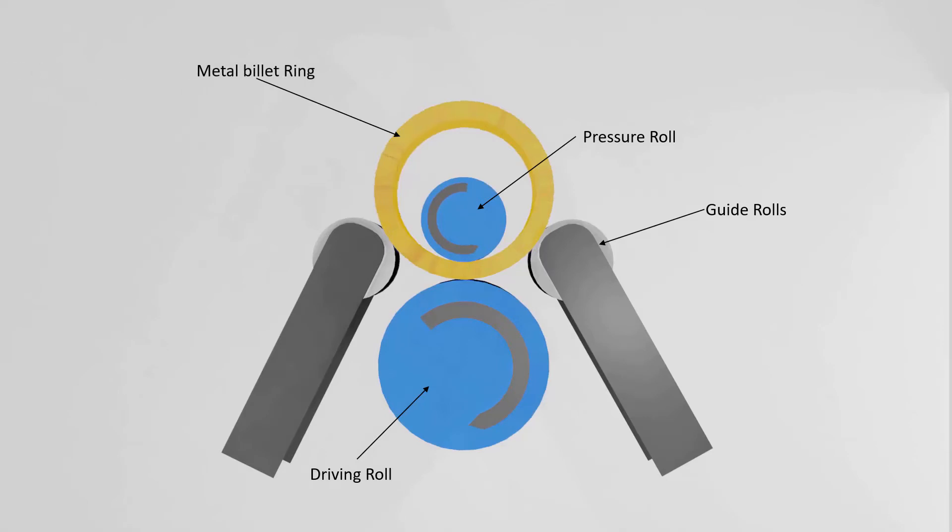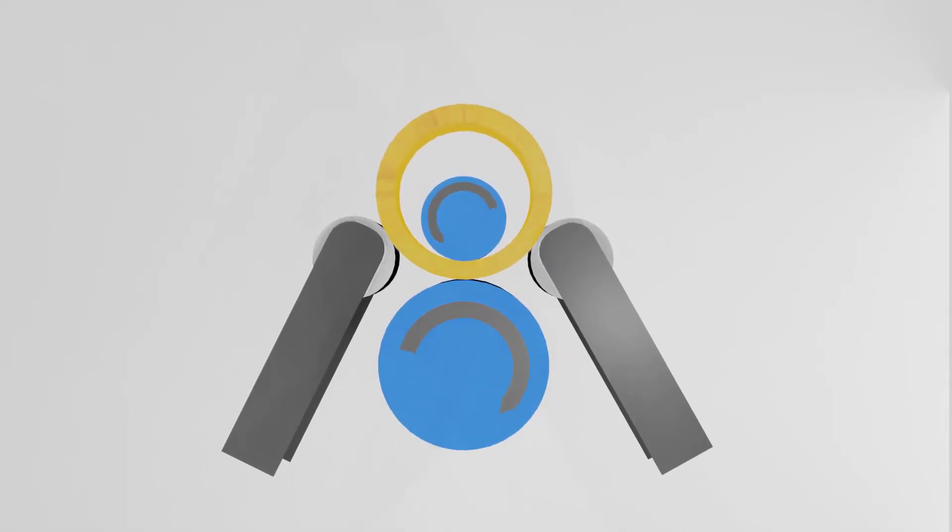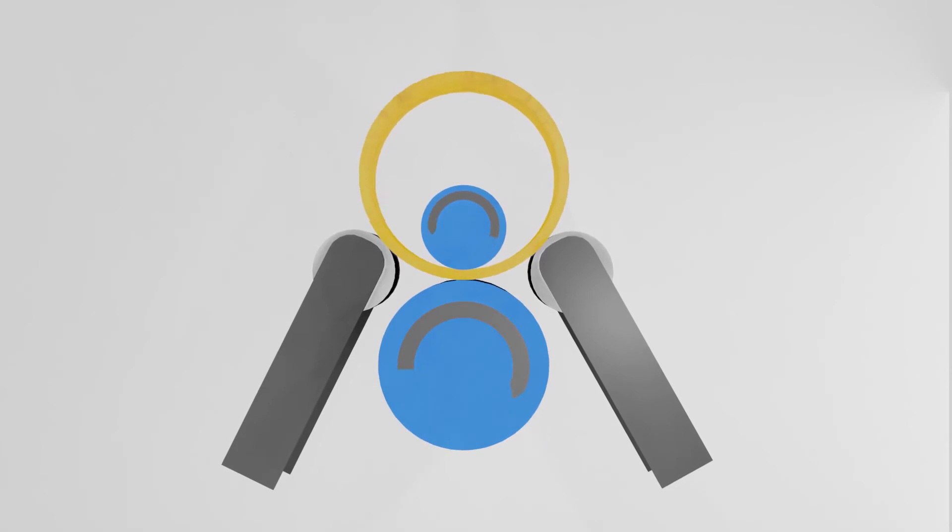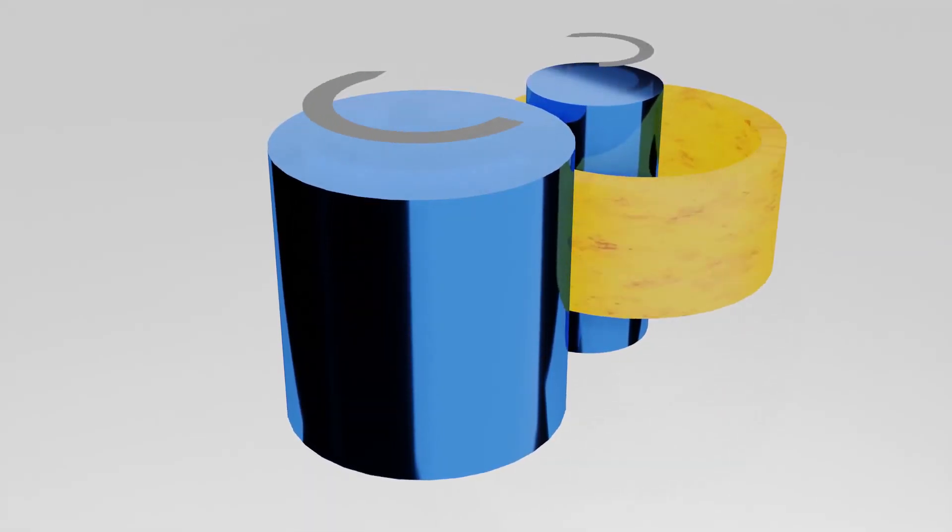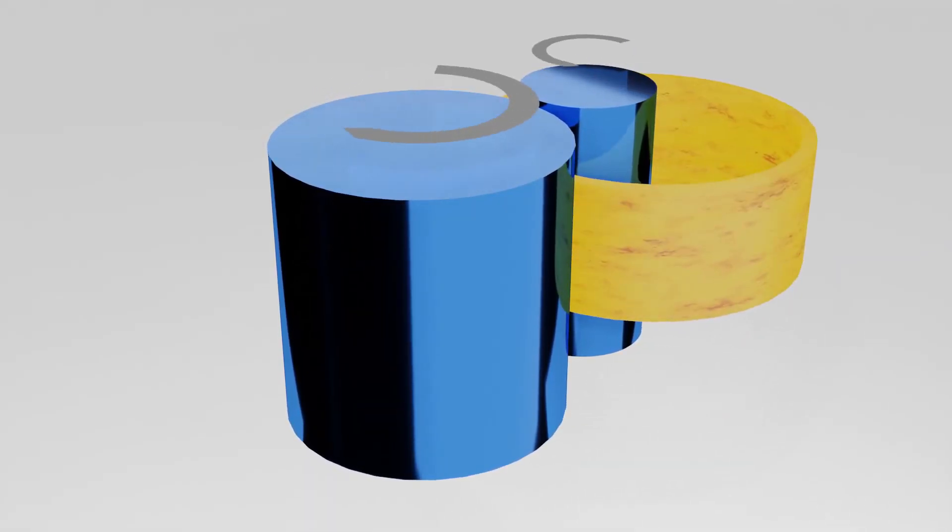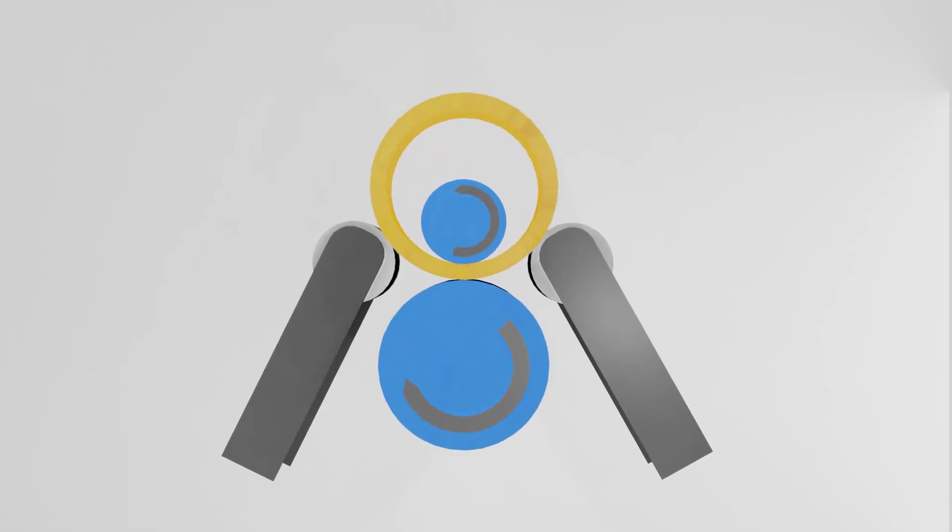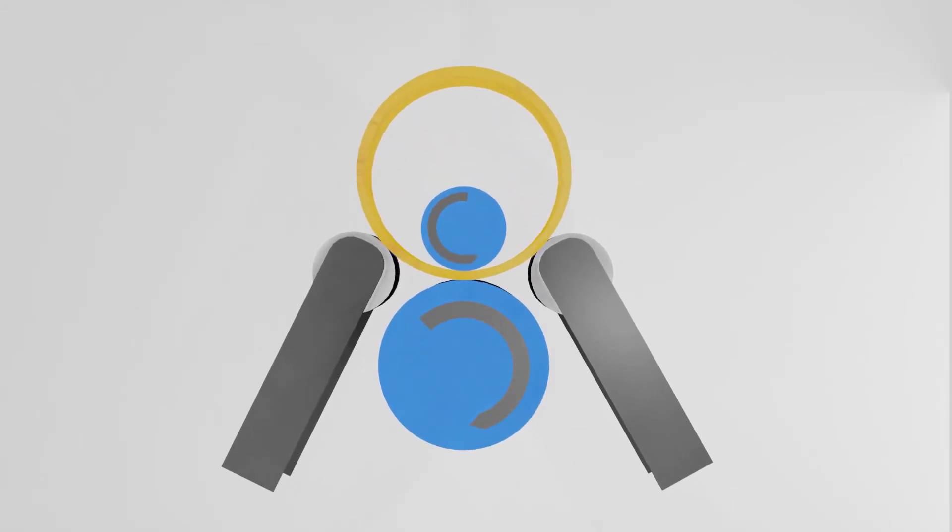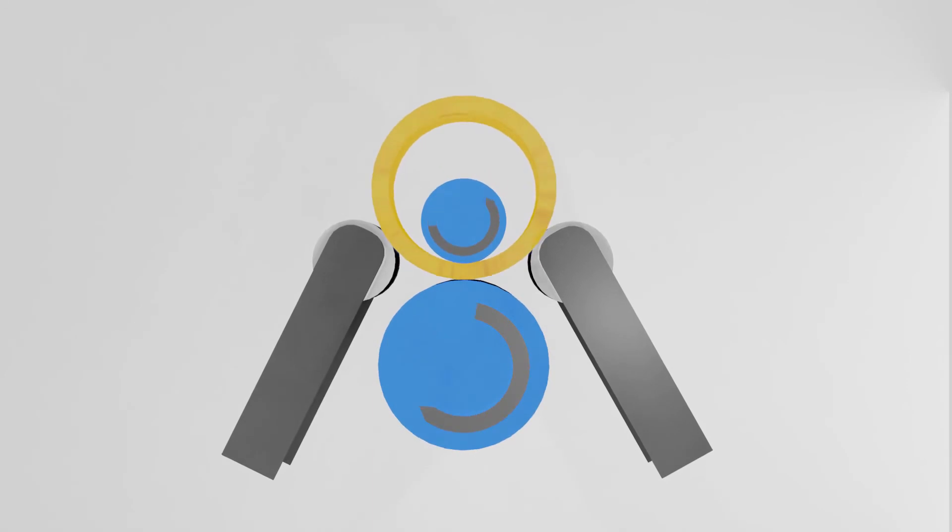How is ring rolling done? In this process, a hot metal billet is placed outside the pressure roll or mandrel. The hot metal cylindrical billet is supported by the driving roll and guide rolls.